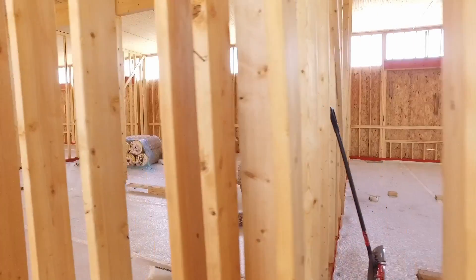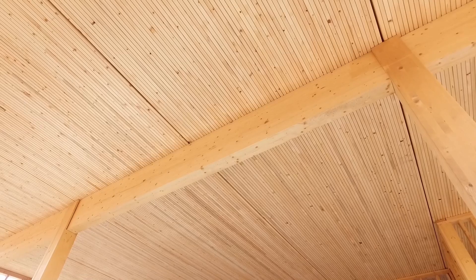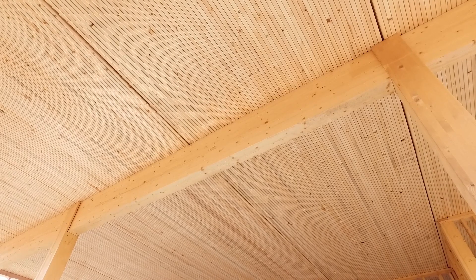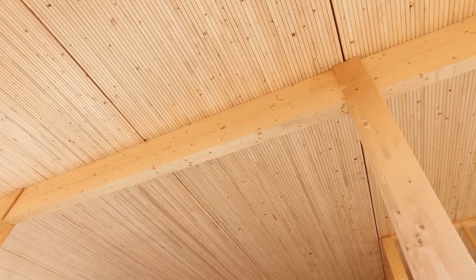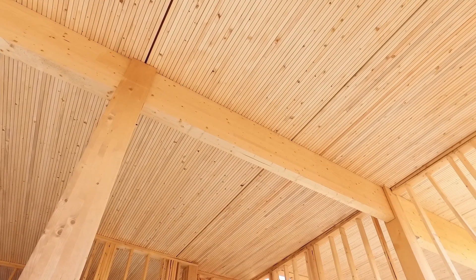We're still limited to the 65-foot overall system height from ASCE 7, but we have the same seismic response coefficient of R equals 6.5. In terms of the mass timber floor and roof diaphragm connections to these light wood frame shear walls, it is generally a very simple connection of self-tapping screws, either installed up through the top plates to the underside of the mass timber floor and roof panel, or installed down through the mass timber floor roof panel into the top plates of the bearing wall.